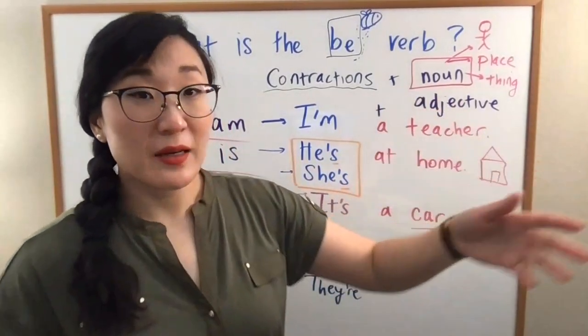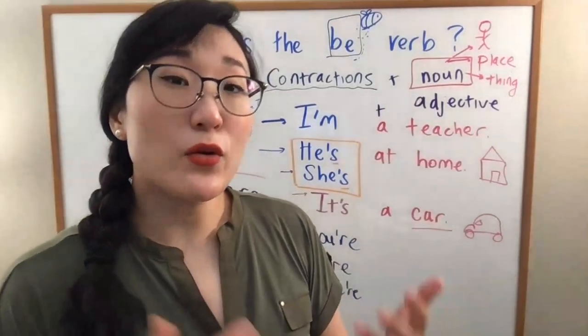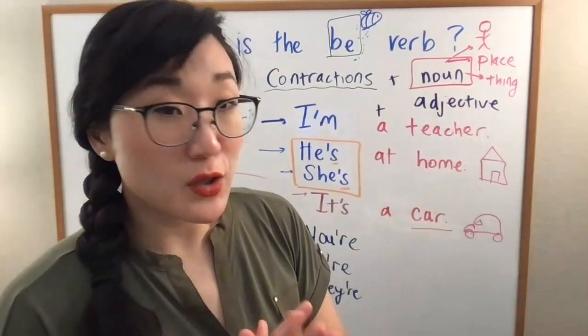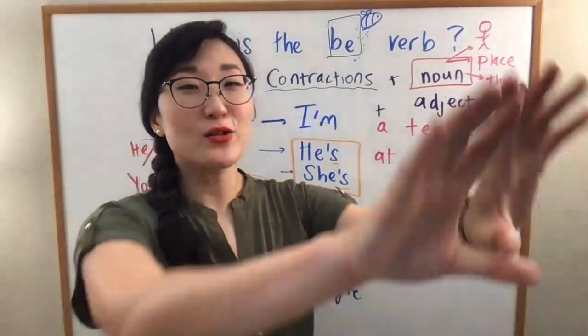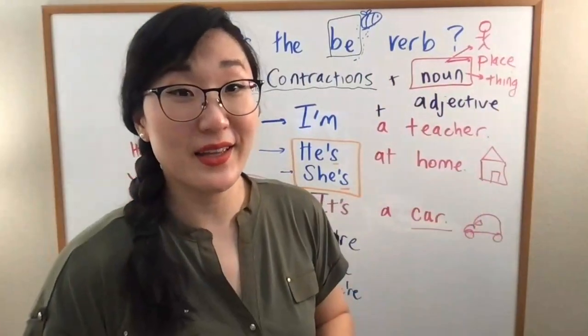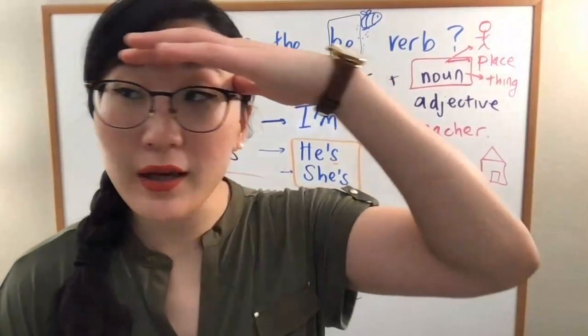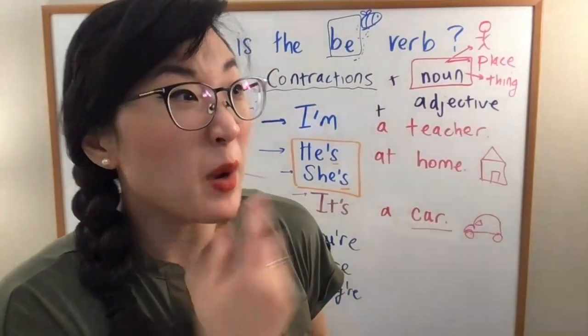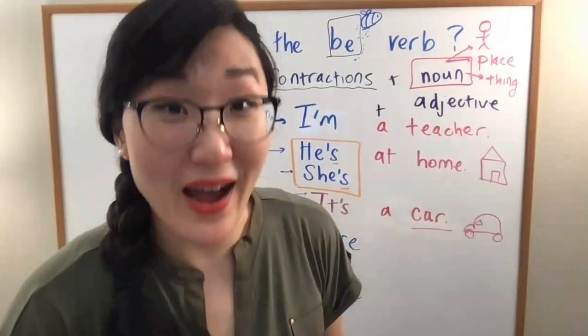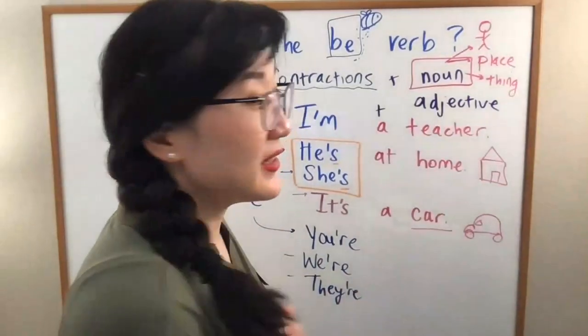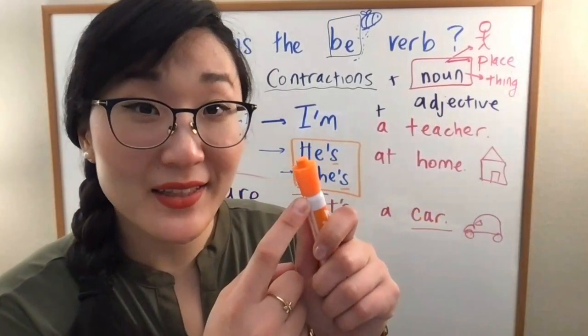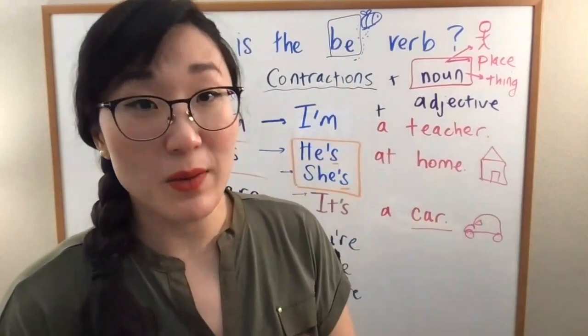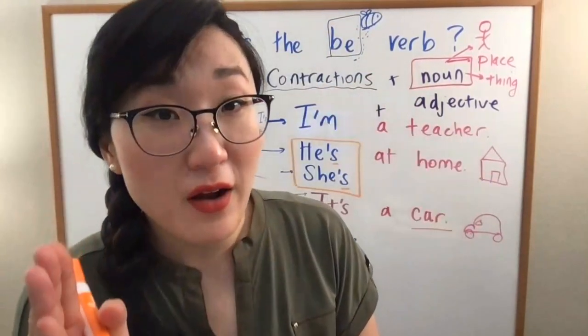An adjective can be an emotion. It can give you more information about a noun. So, imagine you are at Disneyland. There are so many people at Disneyland. And I am looking for my friend. My friend has a hat. Hmm. But thousands of people have hats. And I say, oh, my friend has an orange hat. The color is giving me more information about this hat. The hat is my noun. The adjective goes in front of the noun.